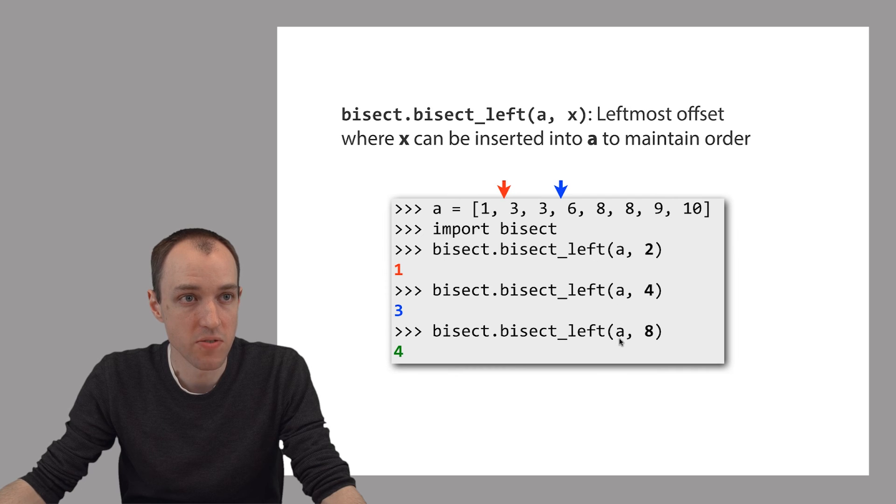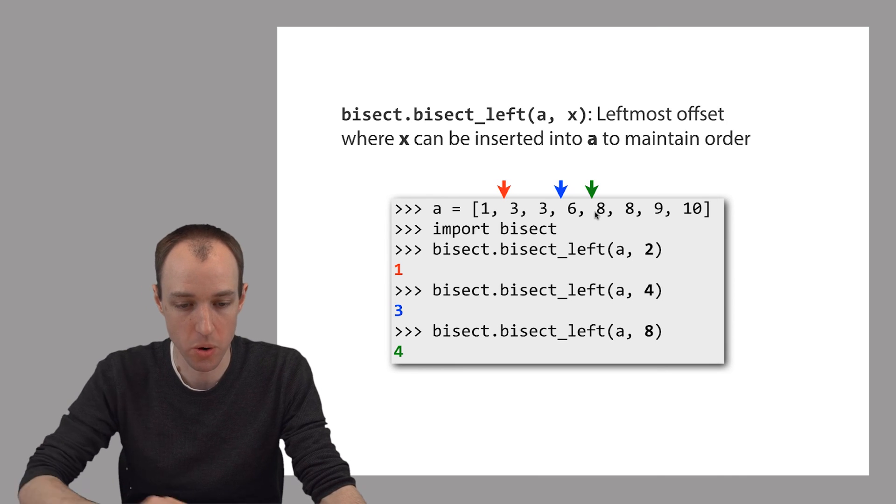And in this final example, we're calling bisect_left with a and the parameter 8. It's telling us that if we want to insert 8 into this list, the leftmost place we can insert it such that the list is still in sorted order is at offset 4. We could have also inserted it at offset 5 or offset 6, and the list would still be in sorted order. But bisect_left always returns the leftmost offset where we can insert it so the list is still in sorted order.